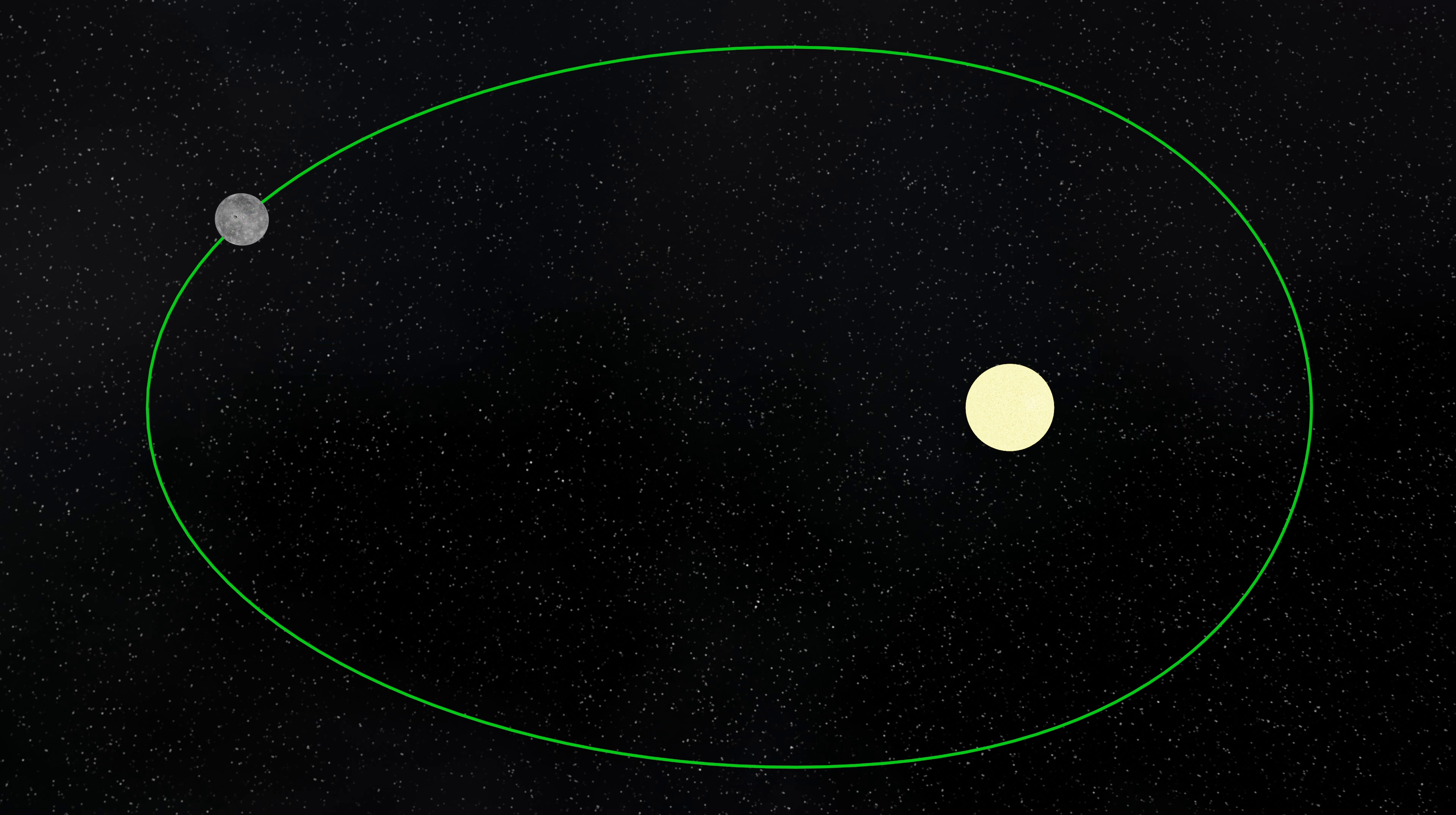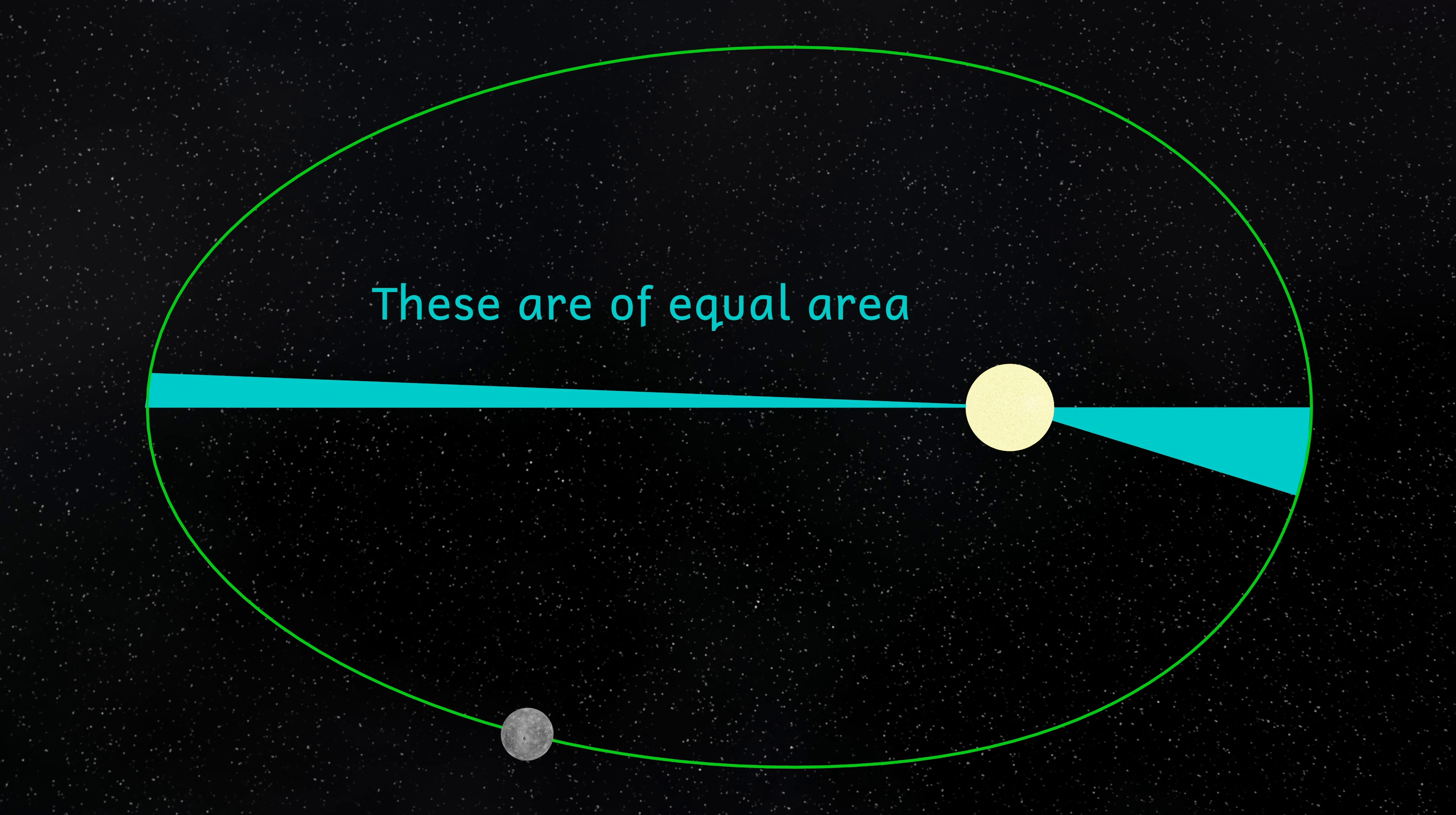In fact, Kepler's second law states that if I was to cut the orbit up into sectors of equal area, the planet would spend equal times in each sector. I've drawn this in a very exaggerated way, but if the planet was taking equal times going through each sector, it would have to speed up to make it round these sectors here in the same time that it would take it to move round these sectors here.